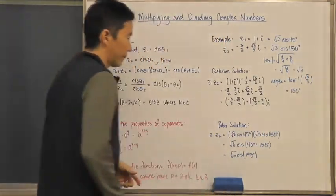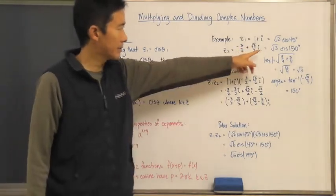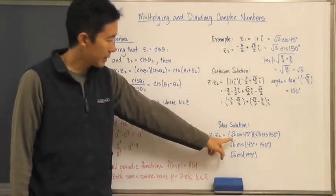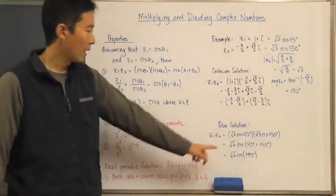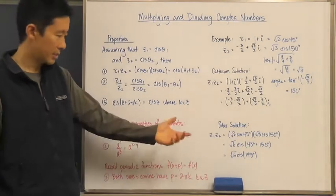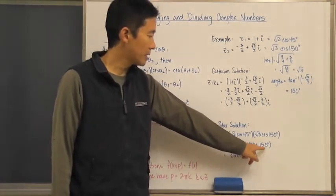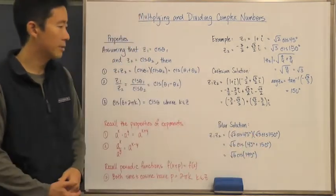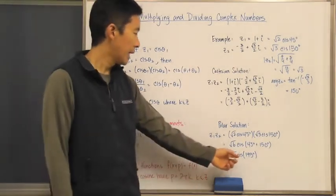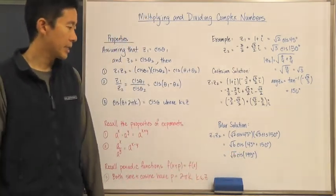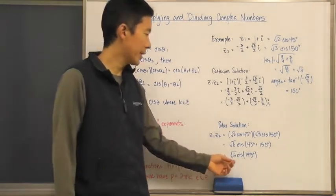When we multiply those two complex numbers in polar form, we get √2 cis 45° times √3 cis 150°. The √2 times √3 gives √6, and we add the angles since we're multiplying in polar form: 45° plus 150°. This gives us √6 cis 195°.